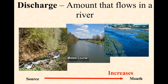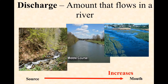Let's start by looking at river discharge — the amount or volume of water within the river at a given time. In the upper course we have a small amount of discharge. In the middle course it has increased, and in the lower course it has increased again. So referring to the Bradshaw model, discharge increases as we travel from source to mouth.